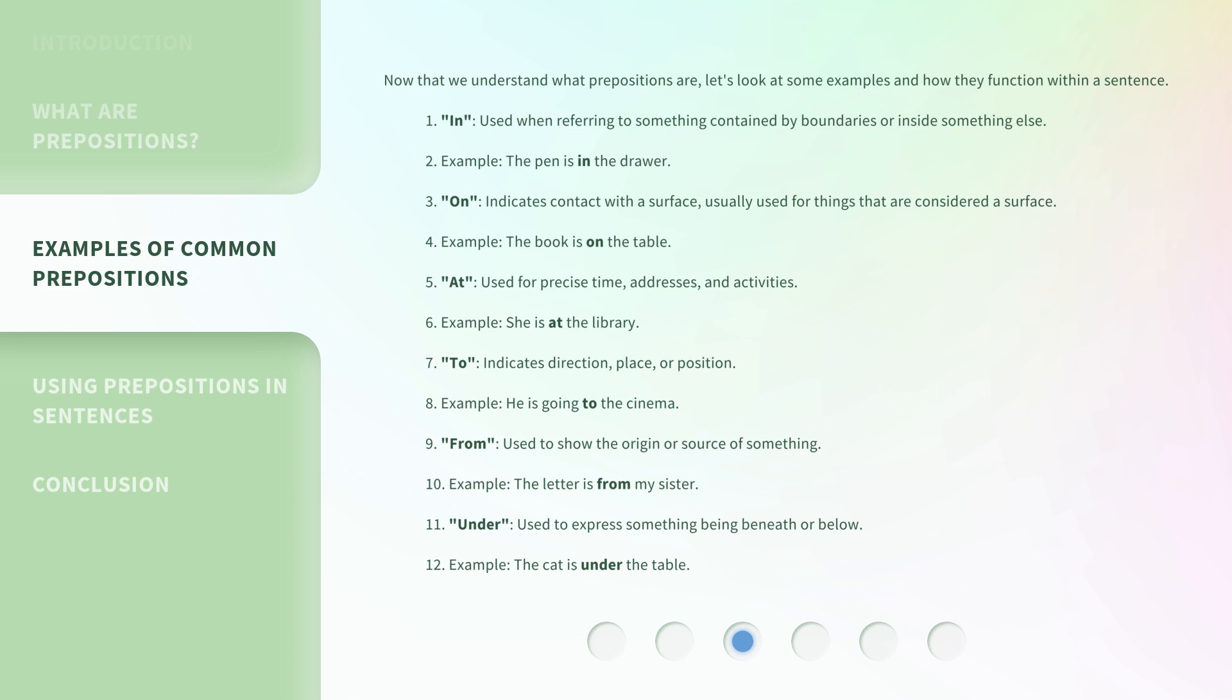On: indicates contact with a surface, usually used for things that are considered a surface. Example: The book is on the table.